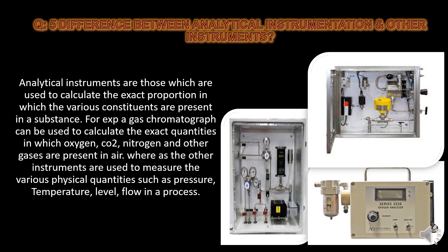What is the difference between analytical instrumentation and other instrumentation? Analytical instrumentations are those which are used to calculate the exact proportions in which various constituents are present in a substance. For example, gas chromatography is used to calculate the exact quantities in which oxygen, carbon dioxide, nitrogen, and other gases are present in air or in a process. Other instruments are used to measure physical quantities such as pressure, temperature, flow, and level in the process.